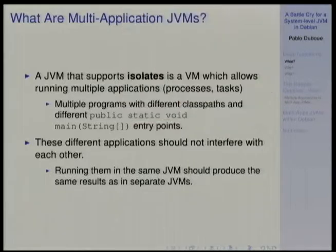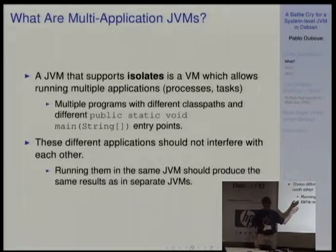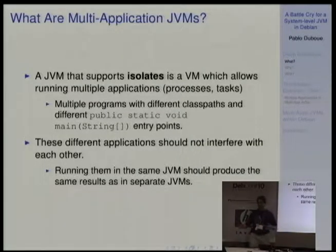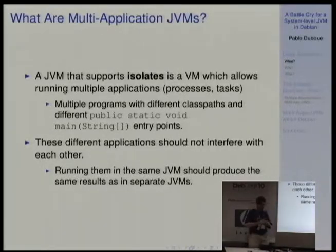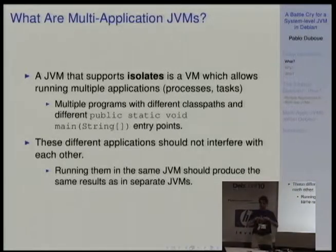So what are multi-application JVMs? The idea is to have a JVM that supports what is called isolates — virtual machines that allow multiple applications or processes, things that have a public static void main and different class paths, to be running on the same virtual machine. These different applications should not interfere with each other, and you should obtain the same result as if you were running them in separate processes.